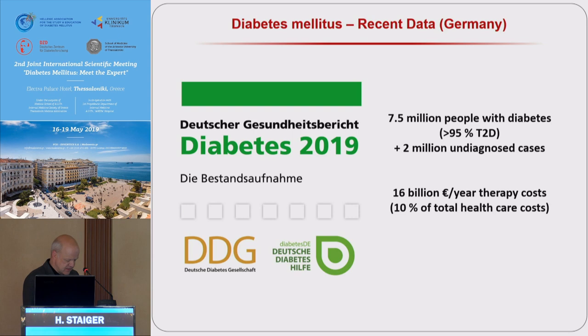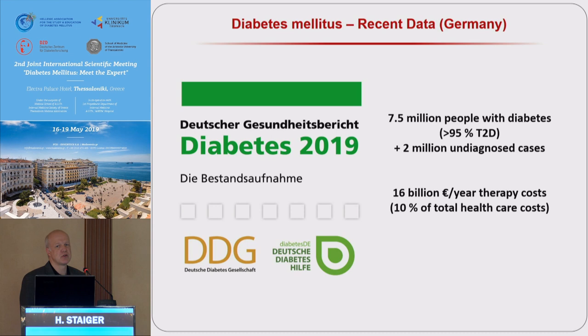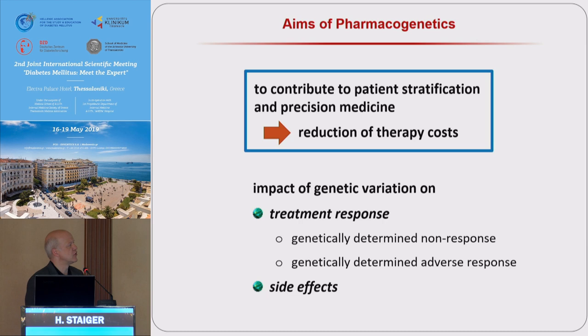And as it is anticipated that the prevalence numbers and the costs will rise in the years to come, there is an urgent need of cost-effective use of anti-diabetic medication. And pharmacogenetics wants to contribute to the reduction of these costs by contributing to patient stratification, stratifying patients according to their genotype, and by contribution to precision medicine.